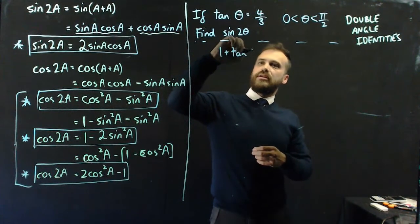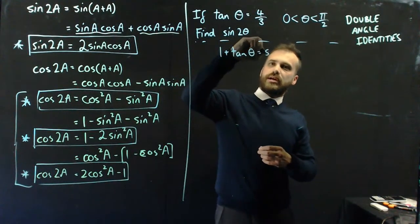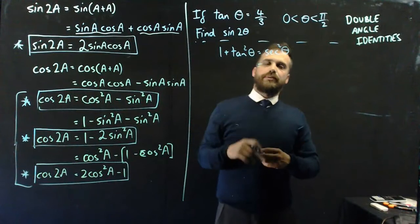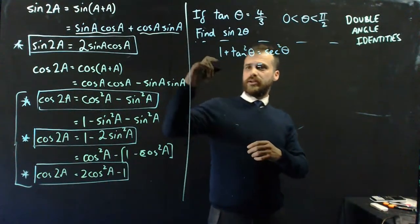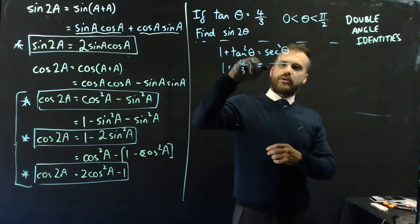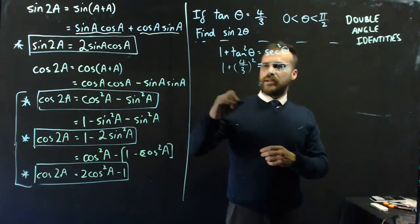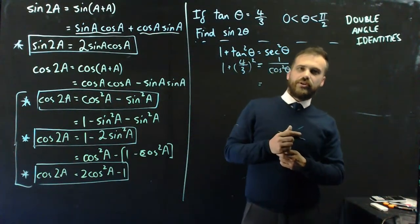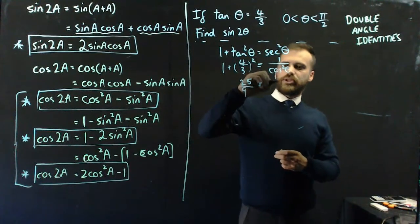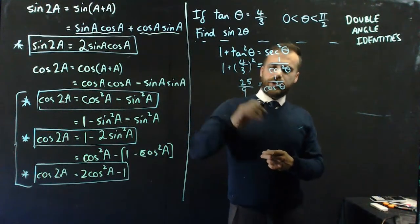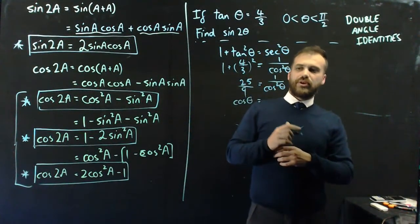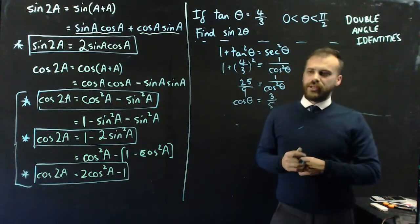Luckily, I have an identity. I can use 1 plus tan²θ equals sec²θ. And sec²θ is the same as 1/cos²θ. That's going to be 1 plus 16/9, which is 25/9, which is 1/cos²θ. Which means that I can rearrange this and I can just say that cos θ is equal to 3/5.